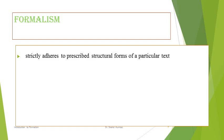Formalism is a philosophical doctrine which espouses the idea of strictly adhering to prescribed structural forms of a particular text. Formalism describes the critical position that the most important aspect of a work of art is its form — the way it is made and its purely visual aspects — rather than its narrative content or its relationship to the visible world.